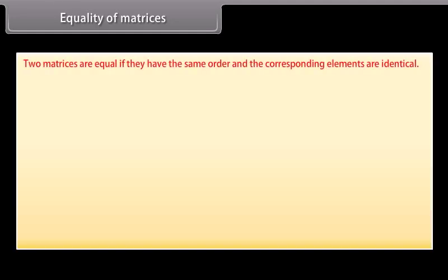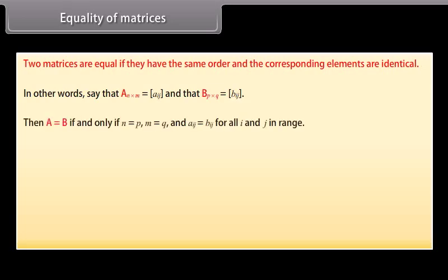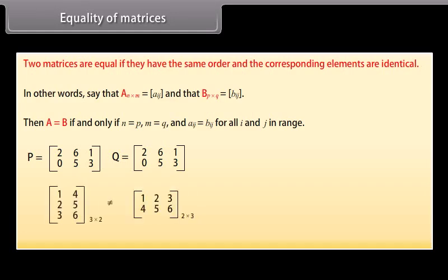Equality of matrices: two matrices are equal if they have the same order and the corresponding elements are identical. In other words, say A (n by m) = [aᵢⱼ] and B (p by q) = [bᵢⱼ]. Then A equals B if and only if n equals p, m equals q, and aᵢⱼ equals bᵢⱼ for all i and j. Here are two matrices which are not equal even though they have the same elements.